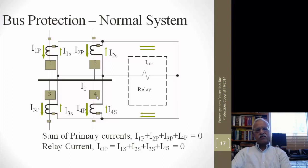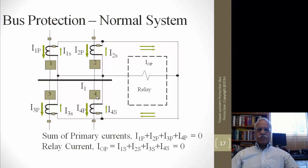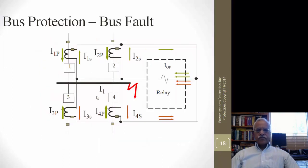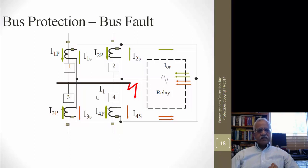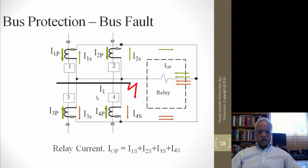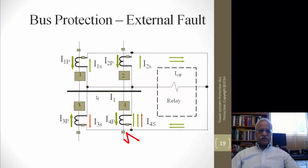The sum of all currents on the secondary side will be zero under normal conditions, as on the primary side Kirchhoff's current law holds. If the polarity is not connected properly there will be an unbalance and current will flow through the relay — so CT polarity is extremely important in bus protection. For a bus fault in an interconnected system, currents are fed into the fault: I1P and I2P remain in the same direction, while I3P and I4P switch direction, and the relay sees a non-zero sum, so operating current equals I1s + I2s + I3s + I4s ≠ 0.